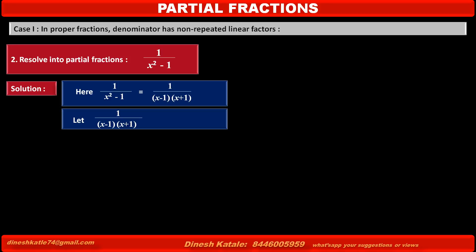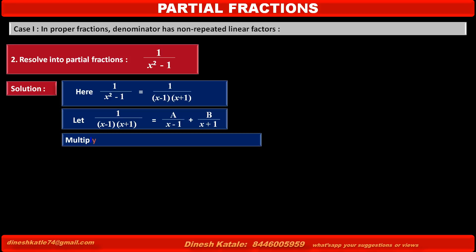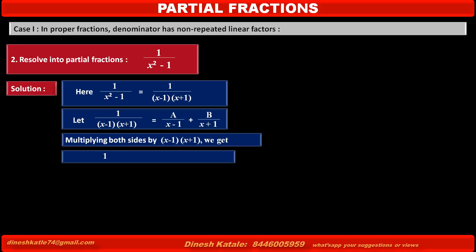Let 1 upon x minus 1 into x plus 1 be equal to A upon x minus 1 plus B upon x plus 1. Since the denominator is x minus 1 into x plus 1, multiplying both sides by x minus 1 into x plus 1, the left-hand side gives 1, and the right-hand side becomes A into x plus 1 plus B into x minus 1. Consider this as equation 1.